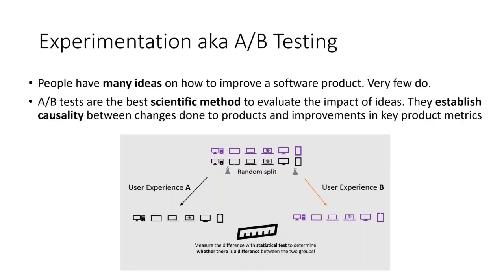Before we dive into our results, consider for a moment how software products get developed. There are many ideas that people believe will improve the product, yet very few of them succeed in doing that. Now to evaluate which ideas are great, controlled experiments, also known as A/B tests, are the golden standard in online software companies.